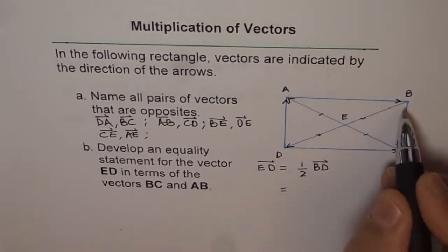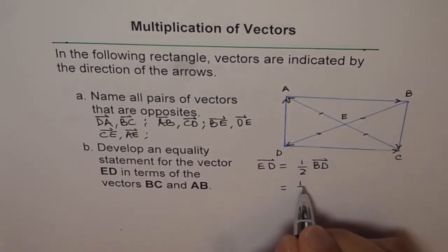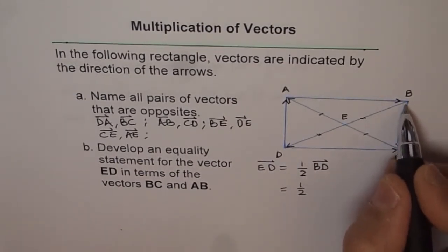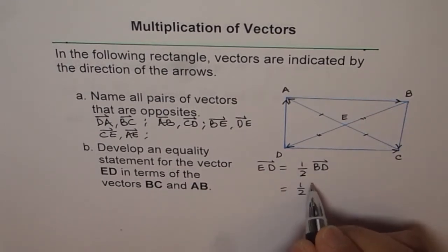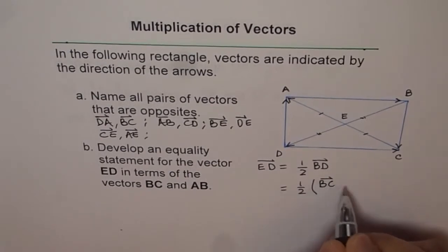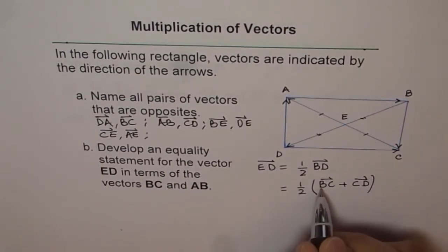Now, what is B to D? Vector BD can be written as B to D, right? It can be written as BC, CD, correct? So, we will write B to D as BC plus CD. So, BC, CD is BD vector, correct?